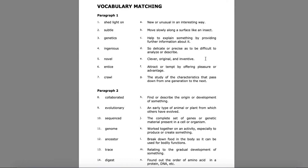Before we begin reading our lesson for today, let's look at the vocabulary that we will be seeing in the article. The article we're reading today is about the Venus flytrap, which is a plant that you'll be able to find here in North Carolina. So let's look at the vocabulary, Paragraph 1.